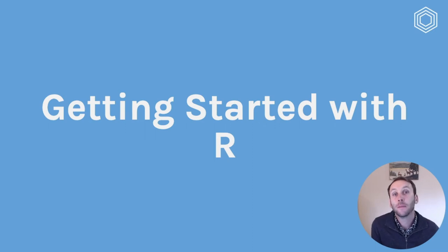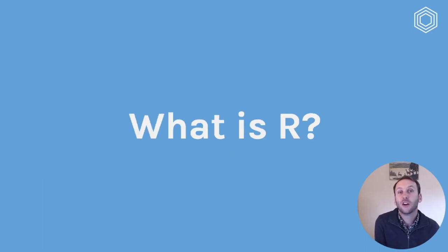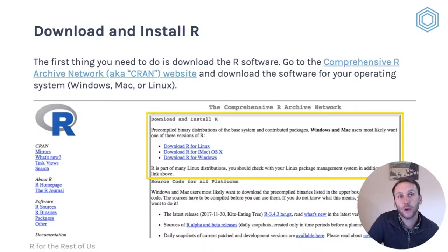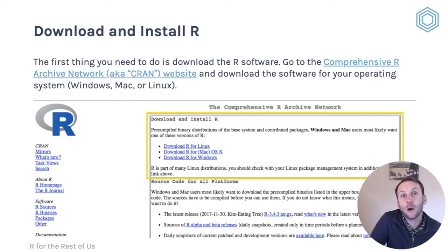Let's start by talking about what you need to do to get started working in R. A lot of people are confused about what R is — it's not as simple as downloading one piece of software and starting. In fact, to work with R, you typically download two pieces of software. To download and install R, you visit the CRAN, or Comprehensive R Archive Network, website and download the most recent version of R itself.